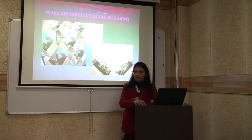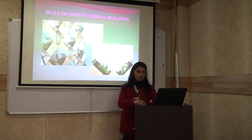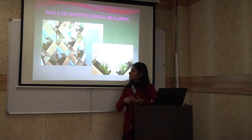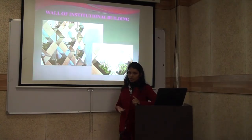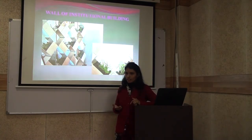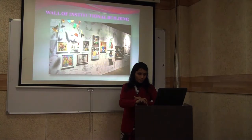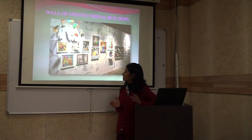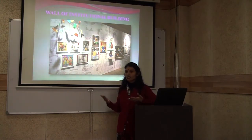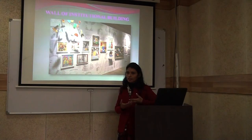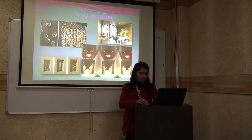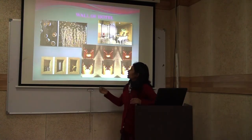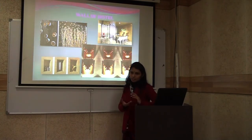This is the wall design for an institution building. There are different types of walls we can build. For example, you can use books, a cross, or files to keep it institutional. But you can also use it in a child's room — like racks, etc. This is for institution. We have done paintings or the work of children. If we put it in another place — like a hotel or hospital — we can build it according to the place. This is another wall of a hotel — for the corner, we can build pieces like this, with plants and decoration.